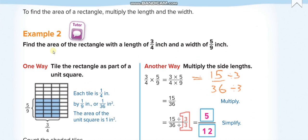Find the area of a rectangle with length 3/4 inch and width 5/9 inch. You know that area of a rectangle is length times width. So you multiply 3/4 times 5/9. Multiply the numerators together and denominators together: 3 times 5 equals 15, 4 times 9 equals 36.